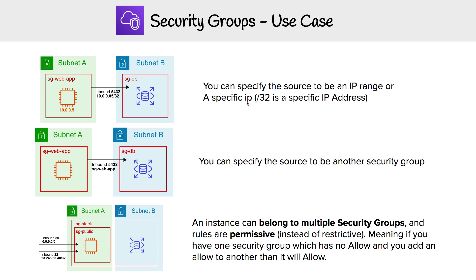Now in the second scenario, it looks very similar. The only difference is instead of providing an IP address as a source, we can provide another security group. So now anything within that security group is allowed to gain access for inbound traffic on port 5432.